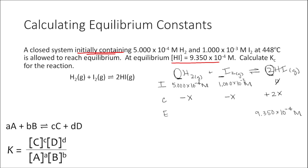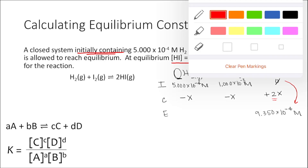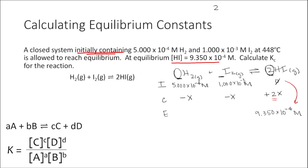I know the concentration of HI increased from zero to 9.35×10⁻⁴ M. So 2x equals 9.35×10⁻⁴ M. Solving for x, x equals 4.675×10⁻⁴ M. I'm not going to do any rounding yet.